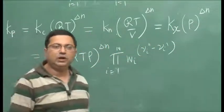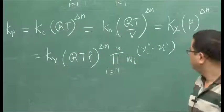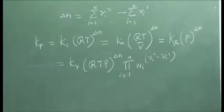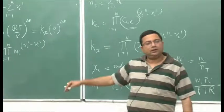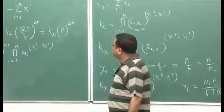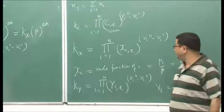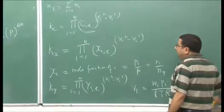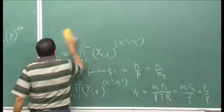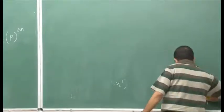These are the different equilibrium constants based on different properties, and this is the relationship among them. Depending on what is known to us, we can estimate the others. This is very important information typically used to estimate one equilibrium constant from the others. Now, before we proceed further with chemical equilibrium, let us solve a problem to make this concept clearer.